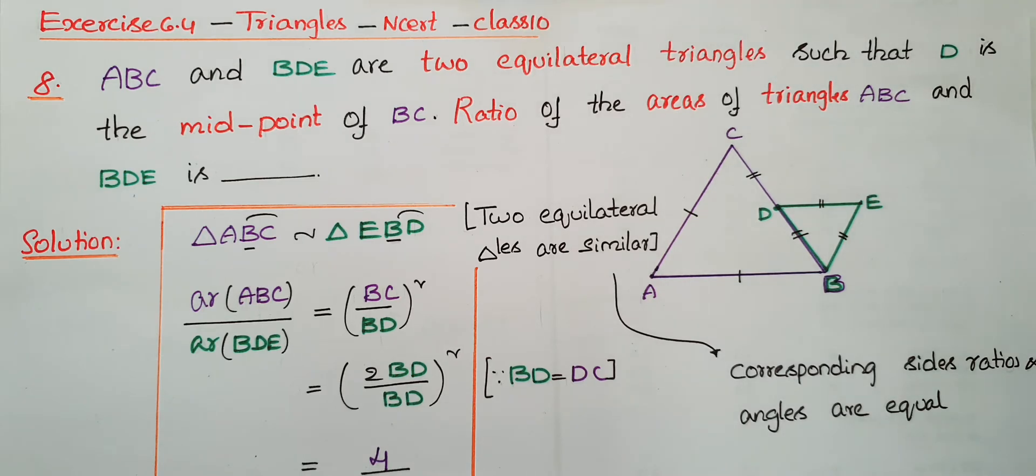This is 8th problem. ABC and BDE are two equilateral triangles such that D is the midpoint of BC. So here ABC and BDE are two equilateral triangles.